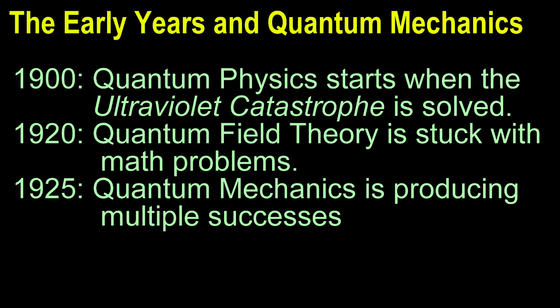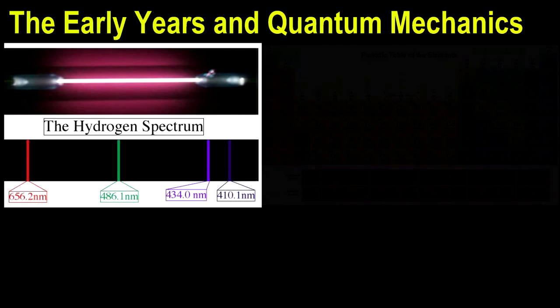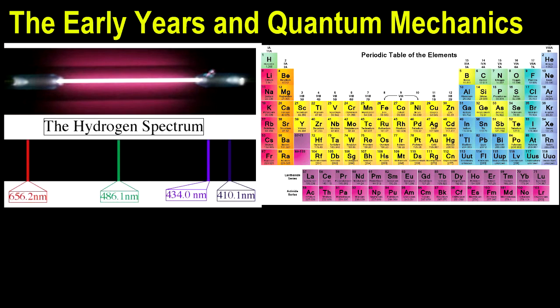Quantum physics really began in 1900 with Max Planck's explanation for black body radiation. Before 1940, quantum field theory was bogged down with technical problems. Meanwhile, another theory called quantum mechanics was producing a good deal of success by explaining the spectral lines of hydrogen atoms and the overall pattern of the periodic table. It wasn't until 1950 that quantum field theory's problems began to be resolved.